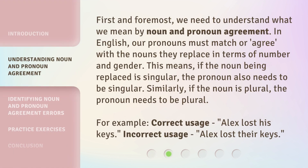First and foremost, we need to understand what we mean by noun and pronoun agreement. In English, our pronouns must match or agree with the nouns they replace in terms of number and gender. This means if the noun being replaced is singular, the pronoun also needs to be singular. Similarly, if the noun is plural, the pronoun needs to be plural. For example — correct usage: 'Alex lost his keys.' Incorrect usage: 'Alex lost their keys.'